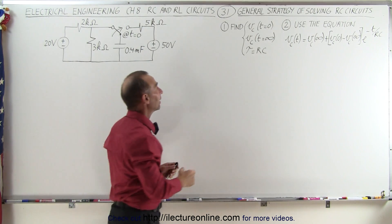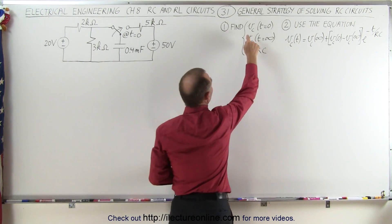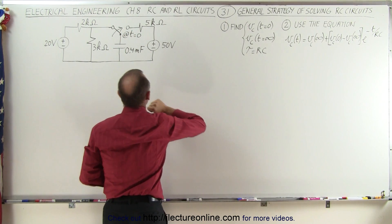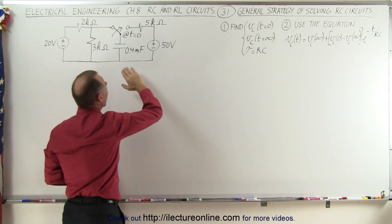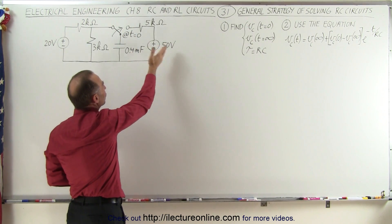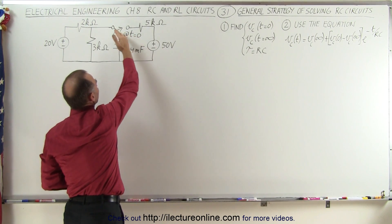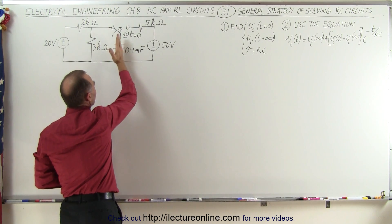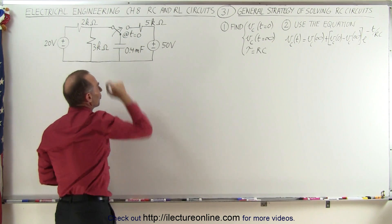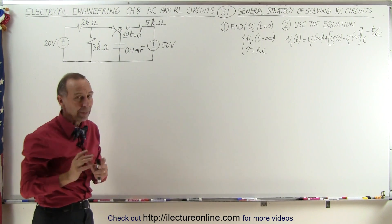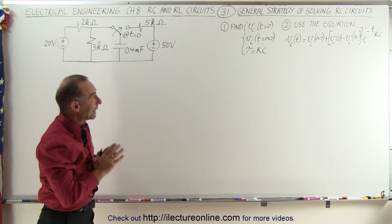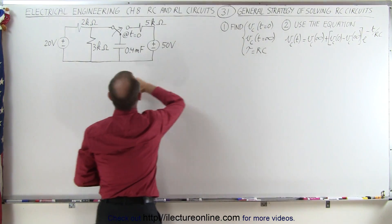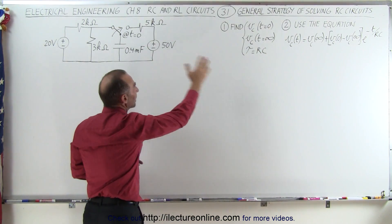First, we want to find the voltage across the capacitor at t equals zero — that's before any changes were allowed to happen. That's the voltage across the capacitor at the very moment the switch switches over. Next, we want to know what the voltage will be when a large amount of time has gone by.